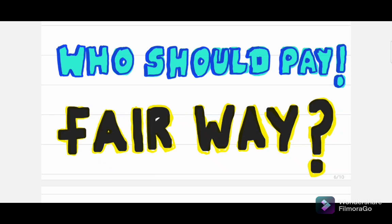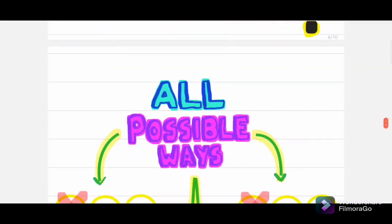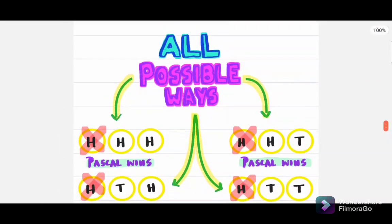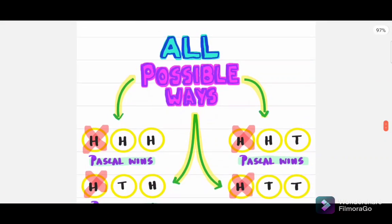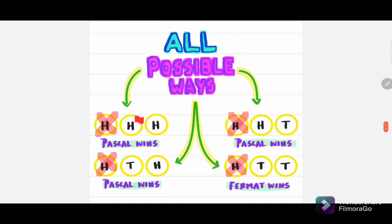Pascal and Fermat decided to write down all the possible ways the game could have continued. Here, as you can see, all four possible ways are equally likely.